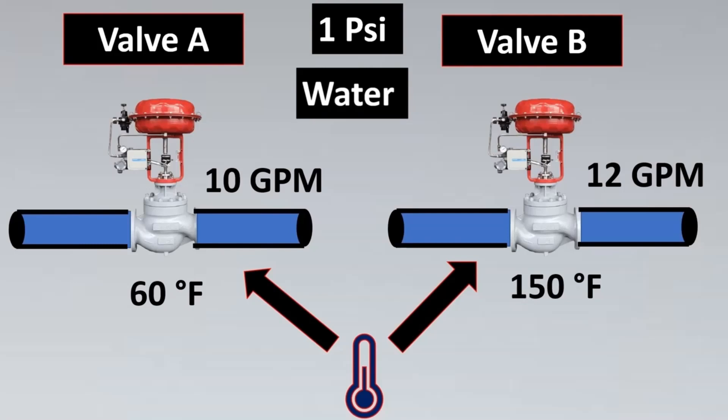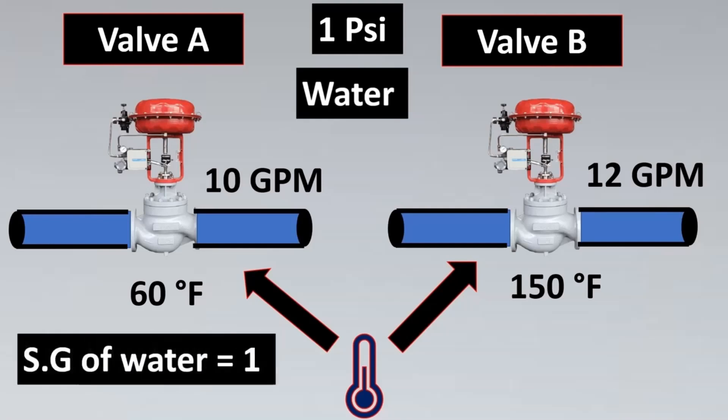Now what is the issue here? There is another parameter which comes into play which is the temperature. So both water being the same fluid might have different temperatures. So first may be at 60 degree Fahrenheit and the other one might be at 150 degree Fahrenheit. So we know as the temperature increases there is again a difference in flow rate so we will have to maintain a constant temperature as well.